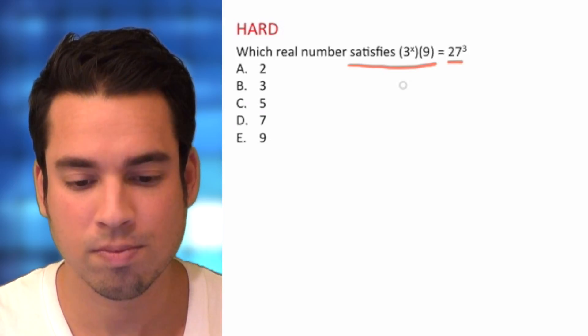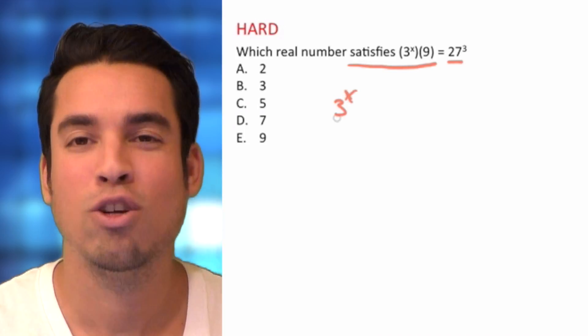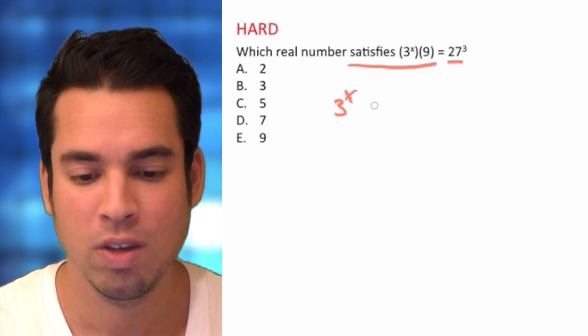So let me show you how this works. We already have 3 to the x. Now we can convert 9 and 27 to 3 to some power. What do I mean? 9 is really 3 squared, right?